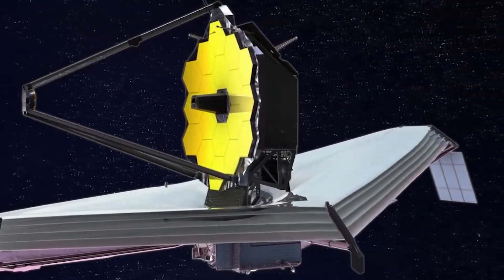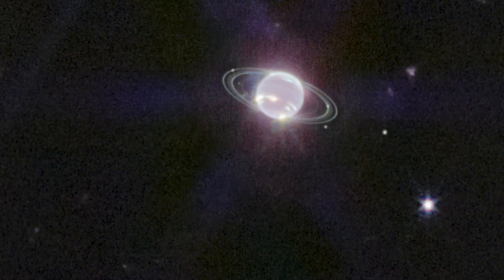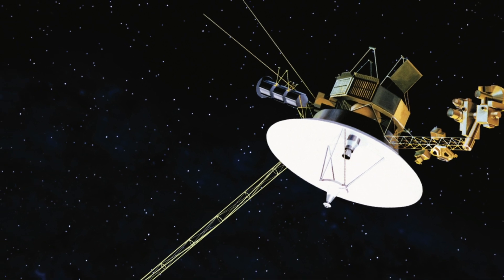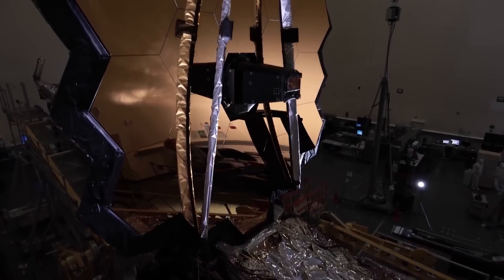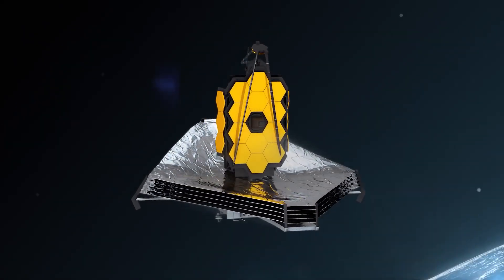James Webb Space Telescope offers a spectacular new picture of Neptune's rings, but Voyager got there first. The James Webb Space Telescope has discovered another spectacular finding which may redefine our view of the planet Neptune.